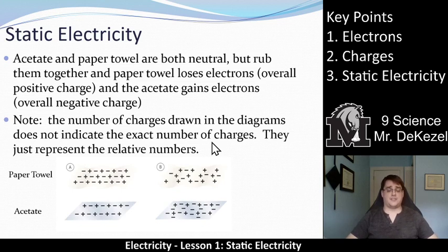So the number of the charges that are drawn in the diagrams doesn't necessarily indicate that there are that many electrons and that many protons. There's actually like millions or billions of them. It just shows like the kind of relative numbers that move. So some electrons will move onto the acetate. So again, if you gain electrons, you become negative. And if you remove electrons, you become positive.